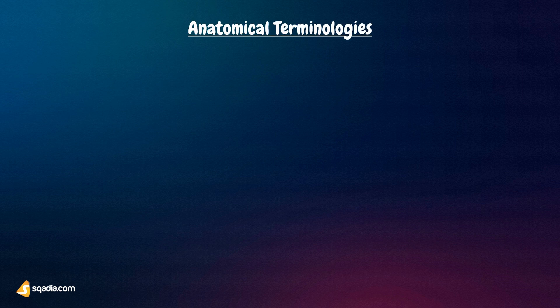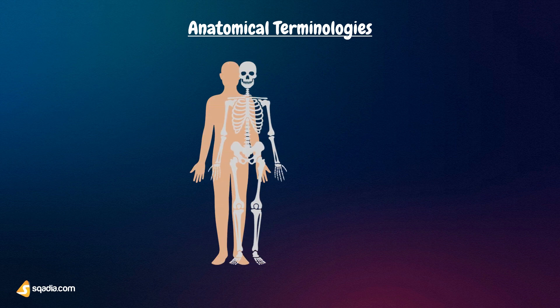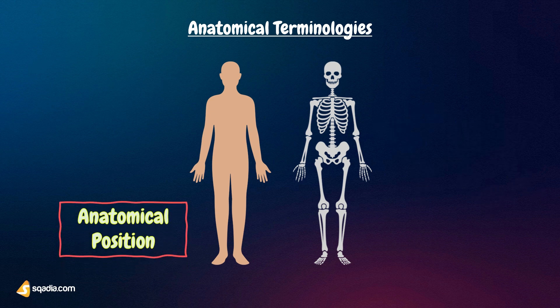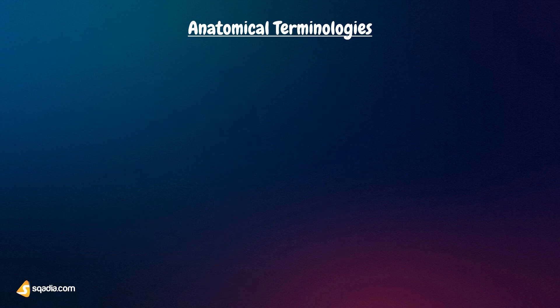To make things easier, anatomists standardize the way in which they view the body. Just as maps are normally oriented with north at the top, the standard human body is oriented in a specific way known as anatomical position. In the diagram shown here, you can see the anatomical position is that of the body standing upright, with the feet at shoulder width and parallel, toes forward. The upper limbs are held out to each side and the palms of the hands face forward. Keeping this position in mind, it is easier to understand the other directional terms.